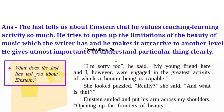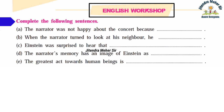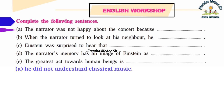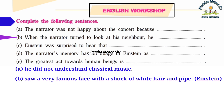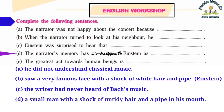English Workshop Activity one: Complete the following sentences. (a) The narrator was not happy about the concert because he did not understand classical music. (b) The narrator turned to look at his neighbor and saw a very famous face with a shock of white hair and a pipe. (c) Einstein was surprised to hear that the writer had never heard of Bach's music. (d) The narrator's memory has an image of Einstein as a small man with a shock of untidy hair and a pipe in his mouth. (e) The greatest act towards human beings is opening up the frontiers of beauty.